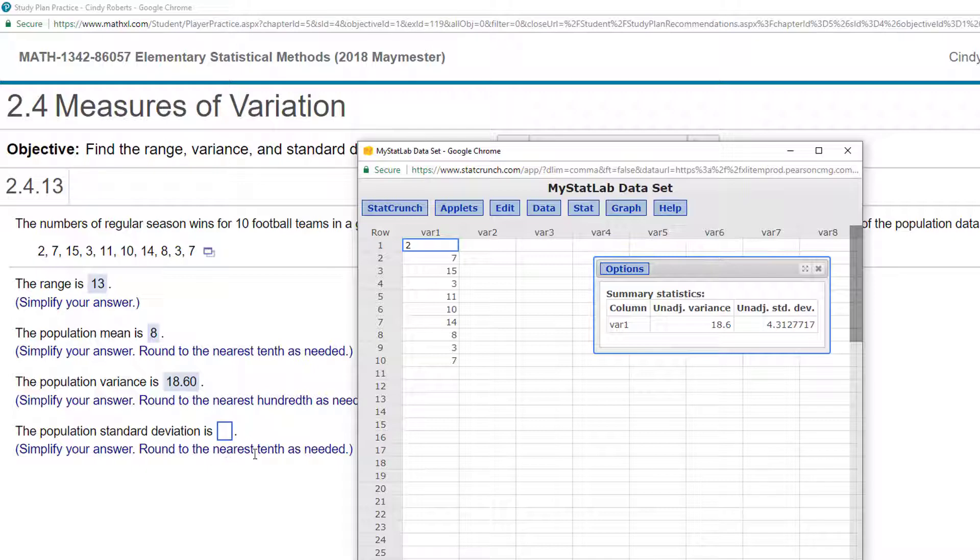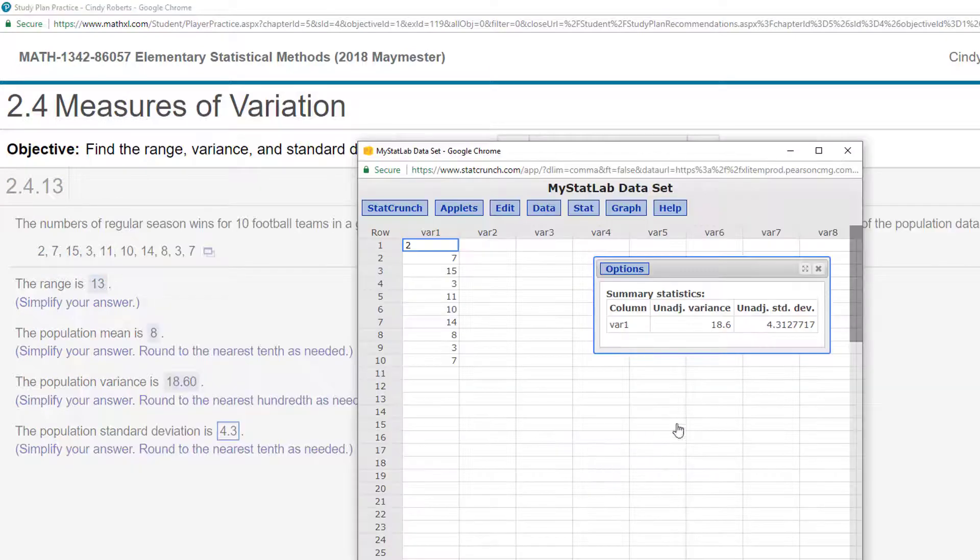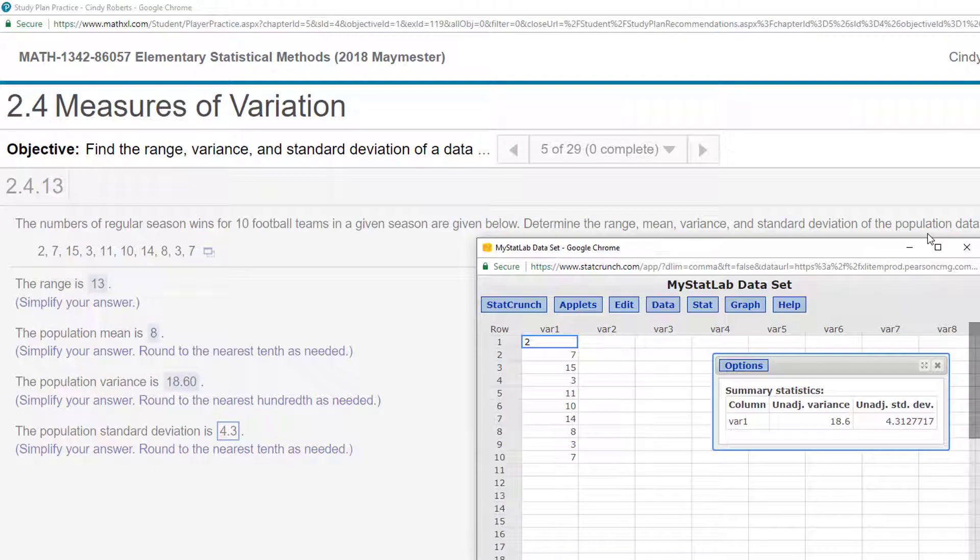And then, so the nearest tenth, one decimal place, 4.3. So that one's a little different. Be sure you read these carefully that this one is the population. So even if you're doing it by hand, be sure you're doing the correct formula.